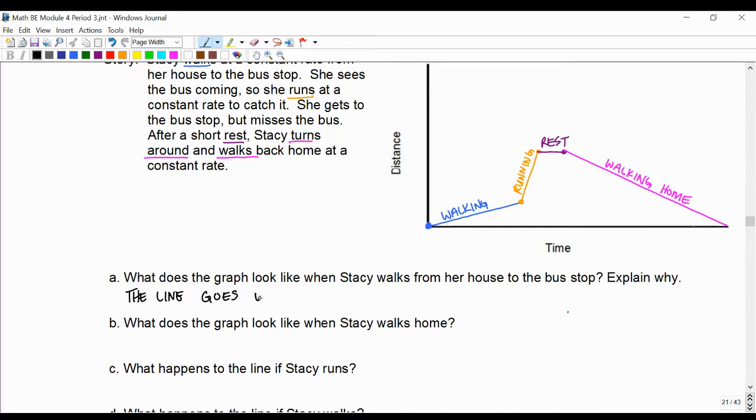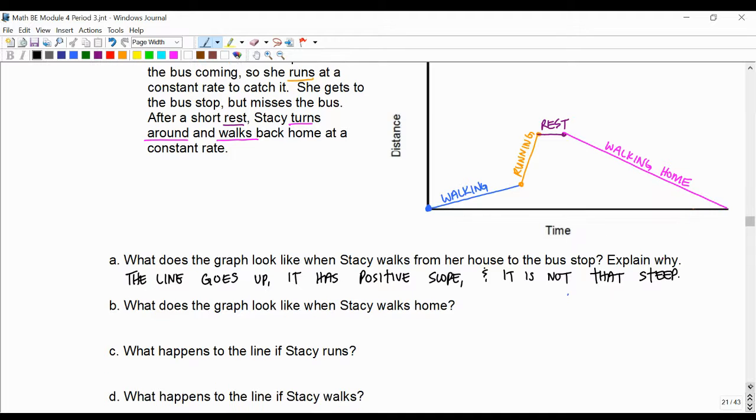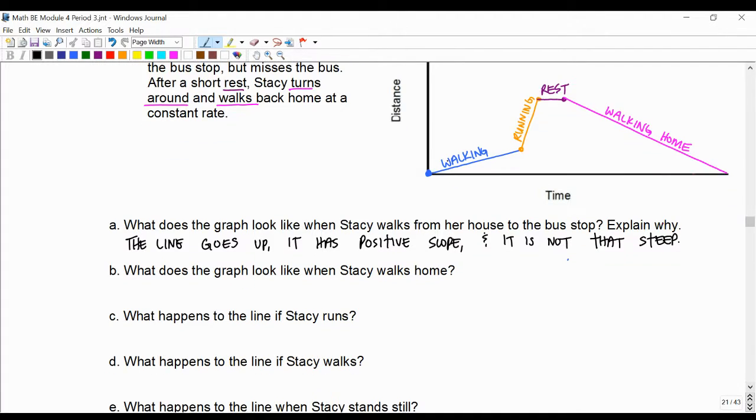It has positive slope. And it is not that steep. Because walking means you're not going quite as fast, right? Walking, and then maybe there's jogging that's maybe a little bit faster, and then running that's faster than that.